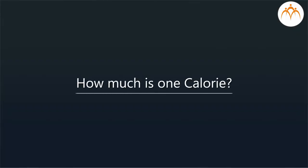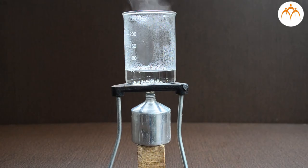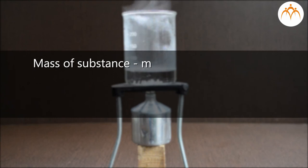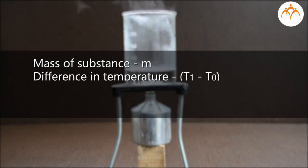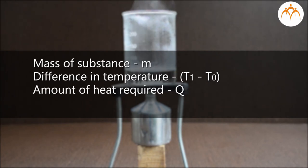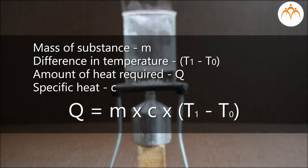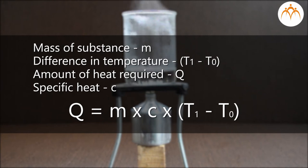How much is 1 calorie? We can generalize the amount of heat required. If m is the mass of the substance and we have to raise its temperature from T₀ degrees to T₁ degrees Celsius, then the amount of heat required will be mass m multiplied by specific heat C multiplied by the temperature difference T₁ minus T₀. Q is the amount of heat required.